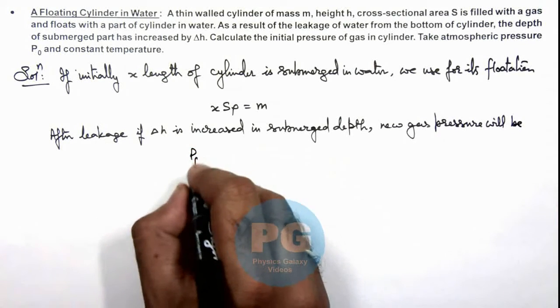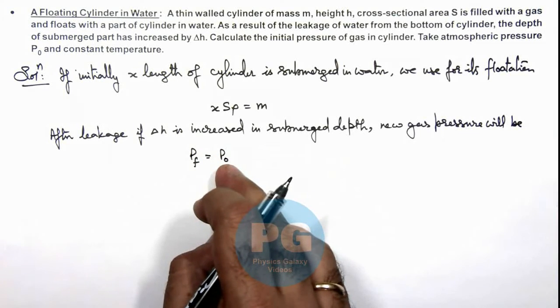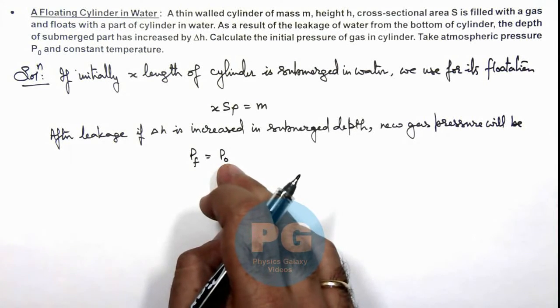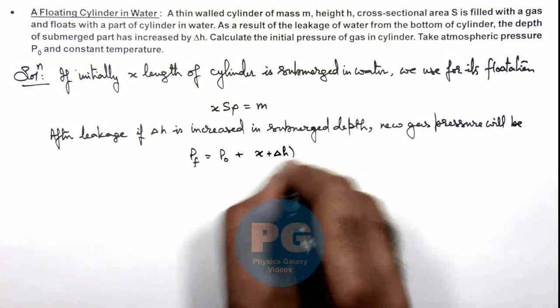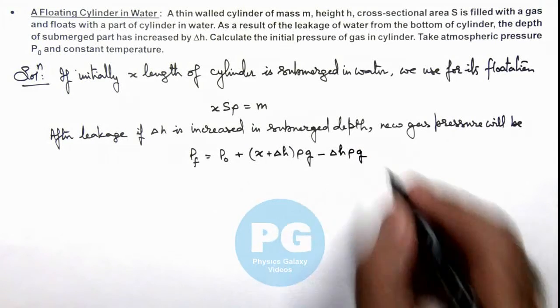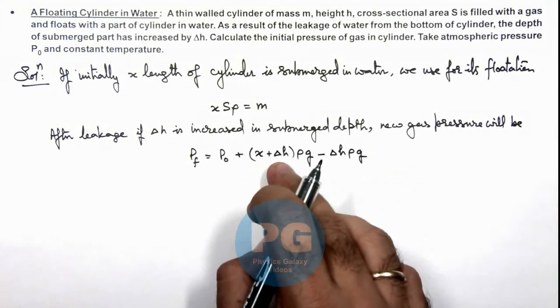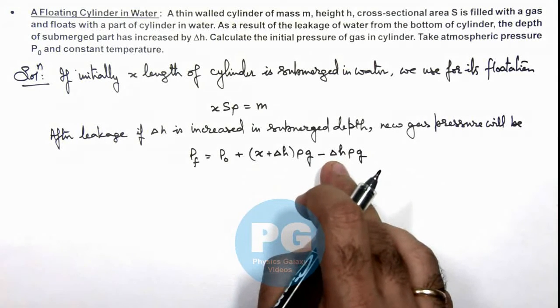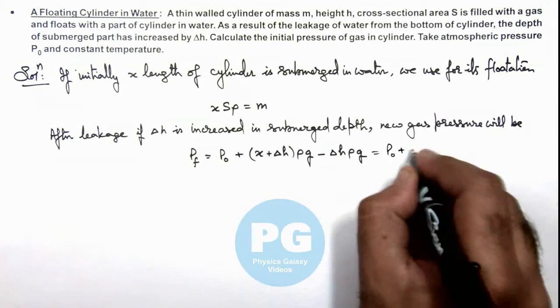This final gas pressure we can write as P atmospheric. The bottom of cylinder is at a depth x plus delta h. Then we can write, this is P₀ plus (x + Δh)·ρ·g minus Δh·ρ·g. This is the final pressure because by this depth, cylinder's bottom is below the surface of water and this is the height of delta h, the water level inside the cylinder from the bottom. So this can be written as P₀ plus x·ρ·g.